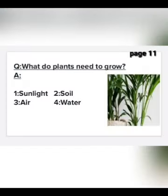Workbook page number 11. Answer the following questions. First question is: what do plants need to grow? Plants need water, air, sunlight, and soil to grow.